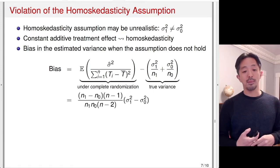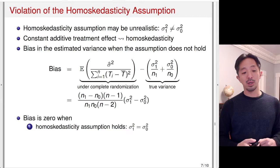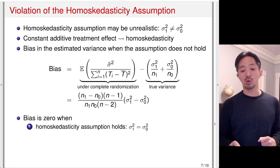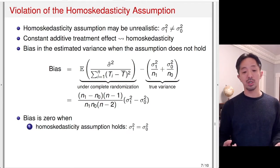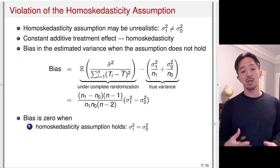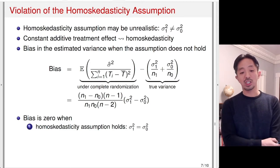Simplifying the formula, we can examine what the result means. The bias is zero when the homoskedasticity assumption holds — that is, sigma_1 squared equals sigma_0 squared, so the potential outcomes have the same variance regardless of treatment condition. This makes sense because the least-squares variance estimator is derived under homoskedasticity, so if potential outcomes have equal variance, the estimator is unbiased.